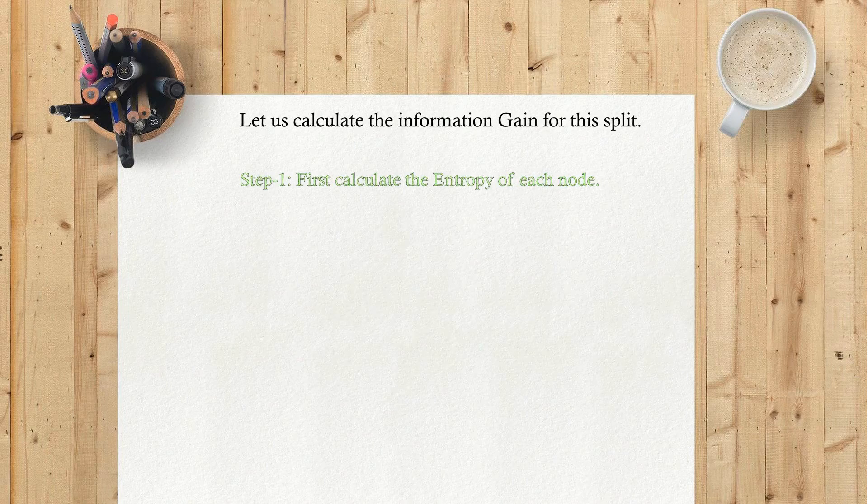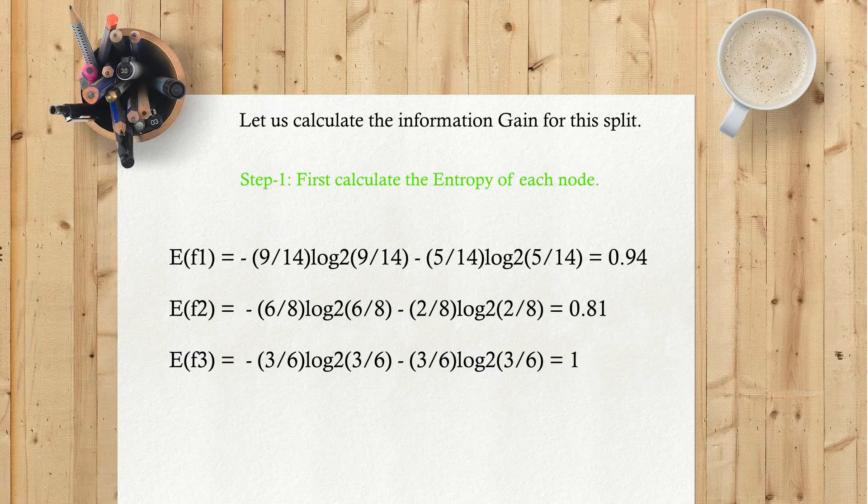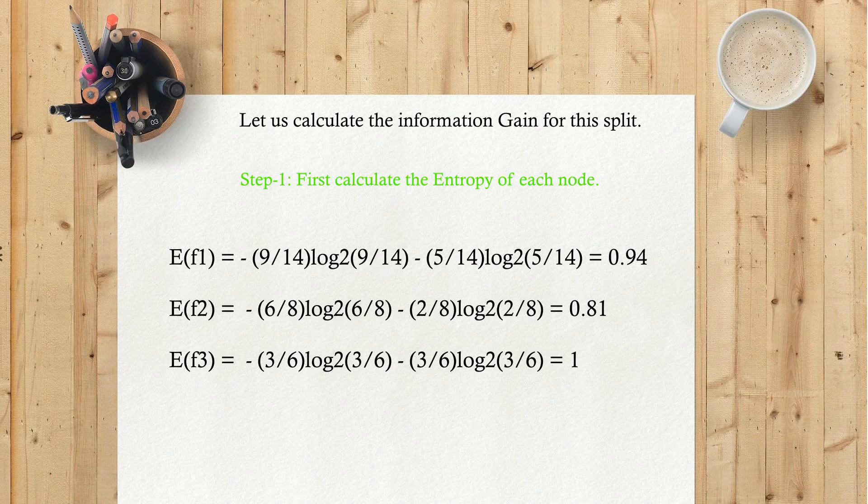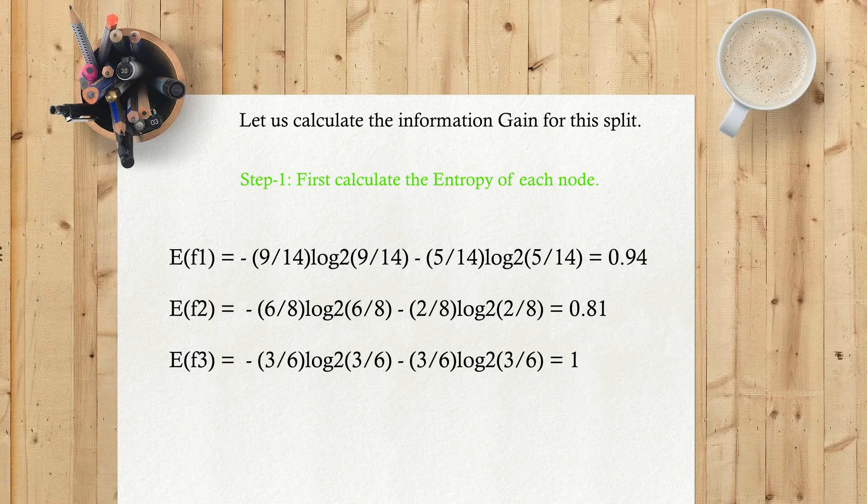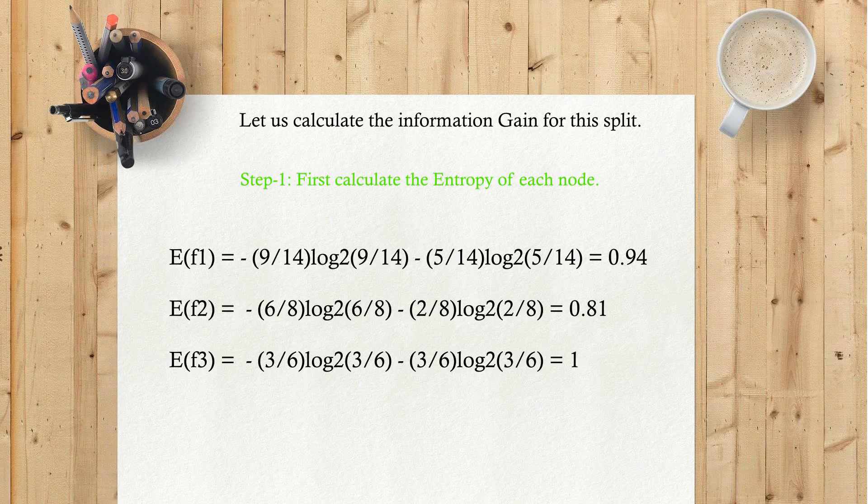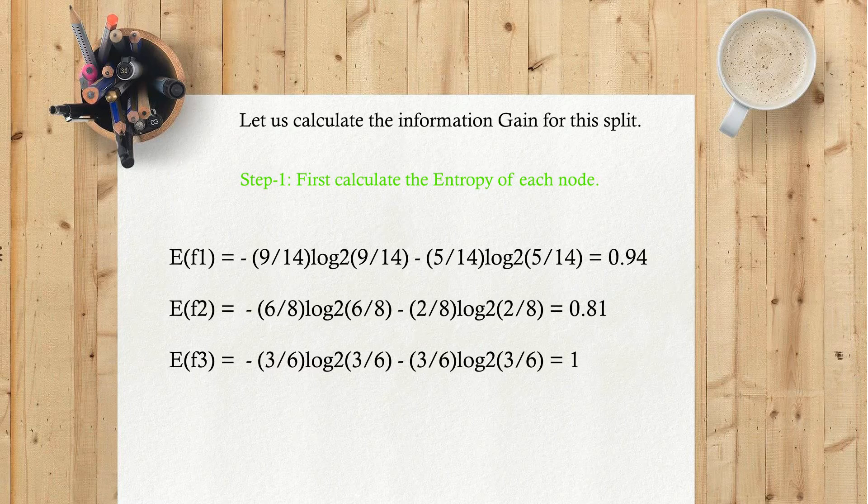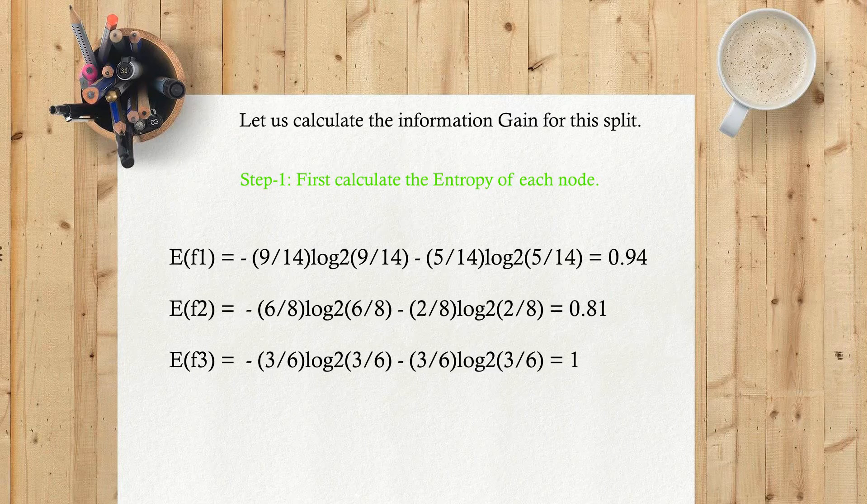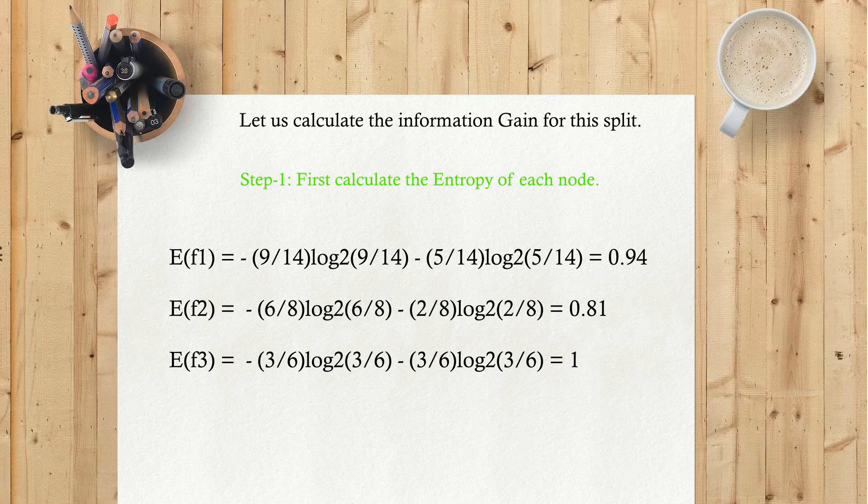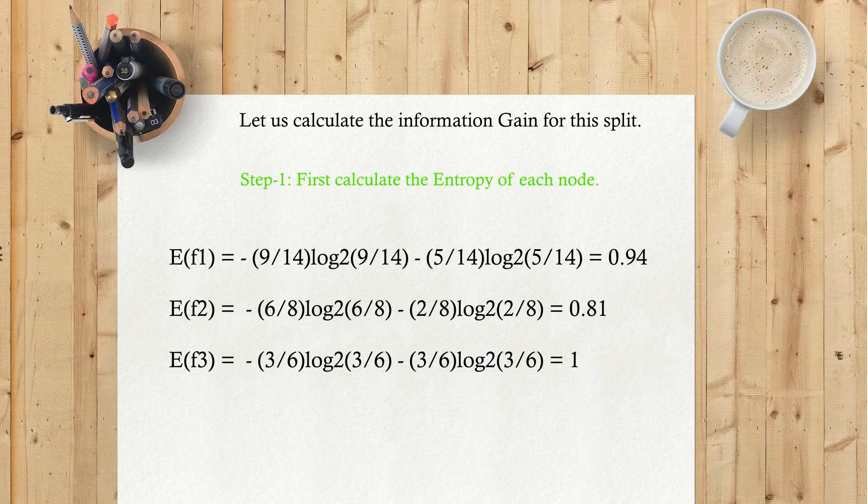Let us calculate the information gain for this split. Step 1: First calculate the entropy of each node. E(F1) = -(9/14)log2(9/14) - (5/14)log2(5/14) = 0.94. E(F2) = -(6/8)log2(6/8) - (2/8)log2(2/8) = 0.81. E(F3) = -(3/6)log2(3/6) - (3/6)log2(3/6) = 1.